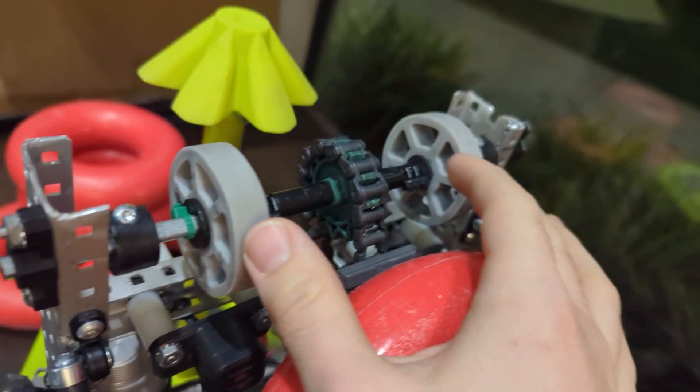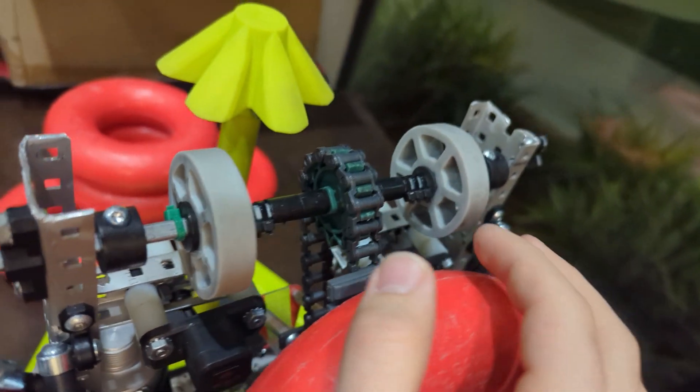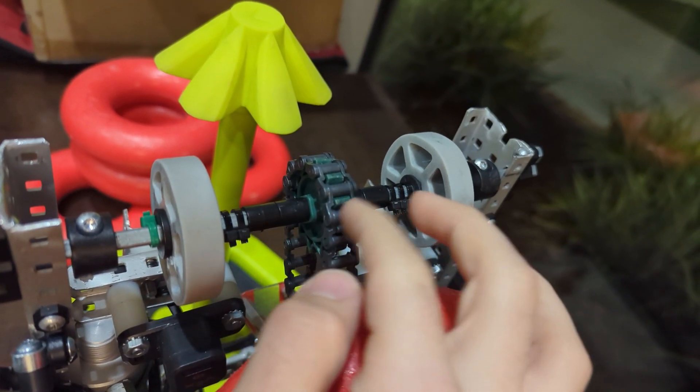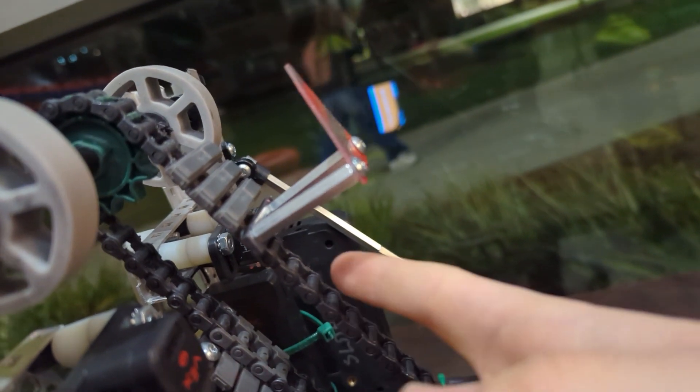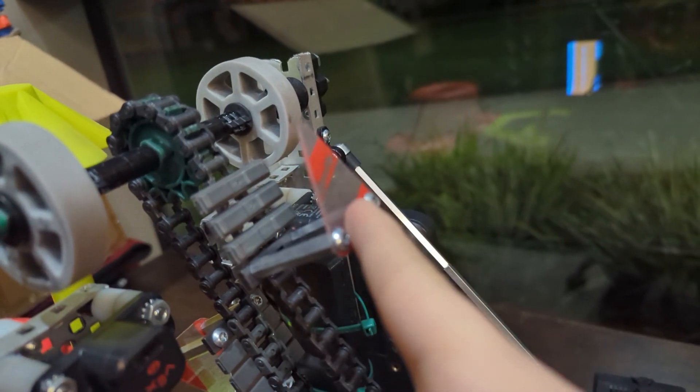The third thing you can change is the geometry of this top roller. You can change how far apart the flex wheels are from the sprocket, how big the sprocket is, how big the flex wheels are, how big your pickups are, how long these standoffs are, and the shape of this hook flap.